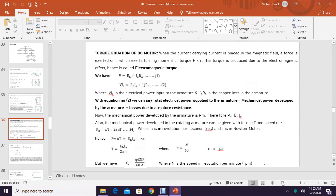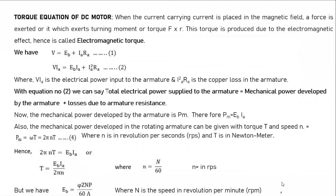Torque equation of a DC motor. When a current-carrying conductor is placed in the magnetic field, a force is exerted on it which exerts a turning moment or torque, equal to force into radius (F × R). This torque is produced due to electromagnetic effect, hence it is called electromagnetic torque.